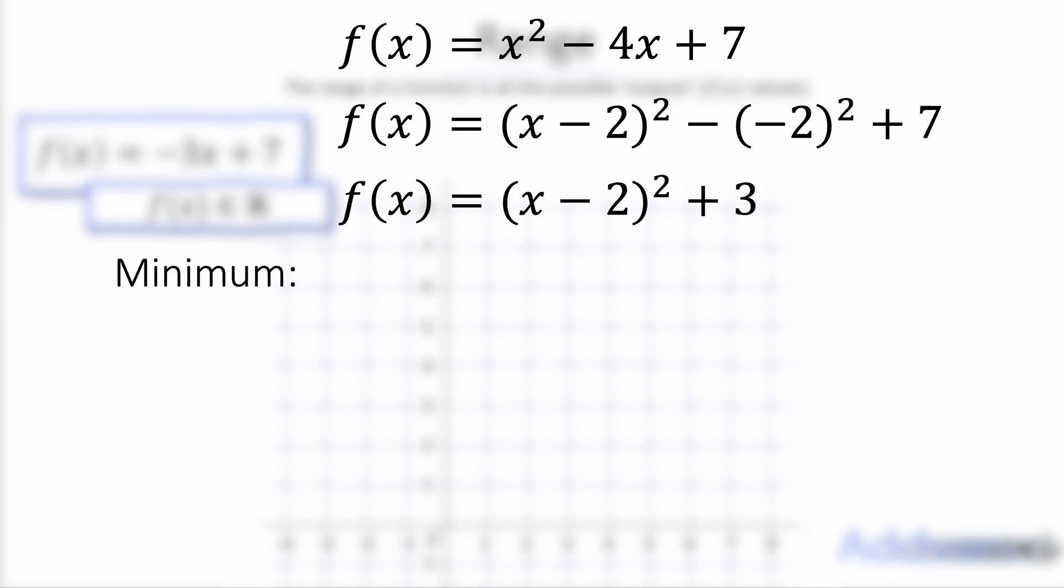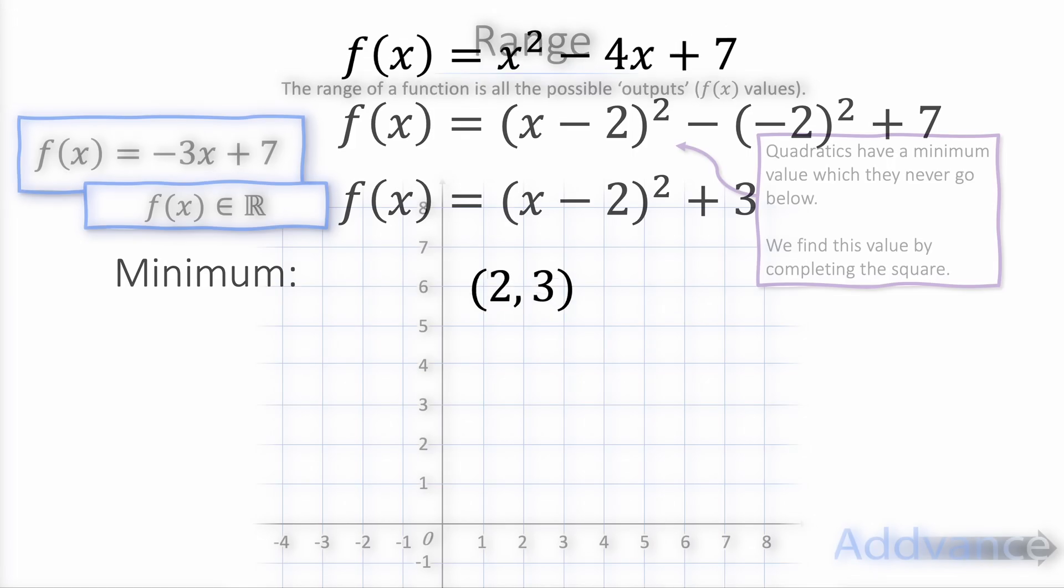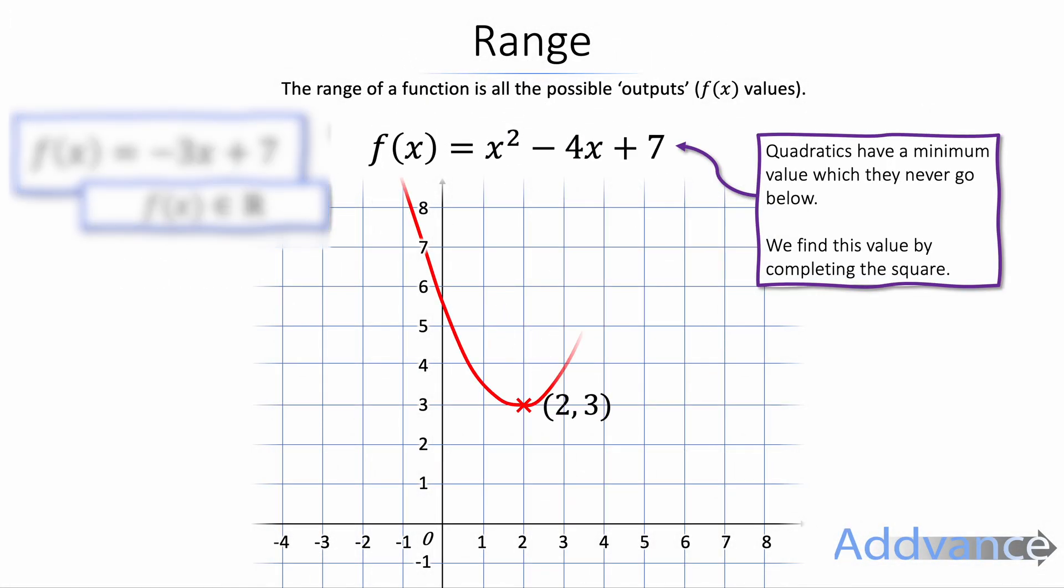If you can't remember how to complete the square you need to watch my video on completing the square. I will link that in the description. The minimum will be given by 2, 3. Because that's a rule when completing the square it's the opposite of the number inside the bracket and it's the number on the end it gives you the minimum. So the graph will look like this where the minimum is 2 across 3 up. Now the range will be anything above 3. Because as you can see for this quadratic the quadratic never goes below 3. And it is a u-shaped curve going above 3. So f of x is more than or equal to 3.